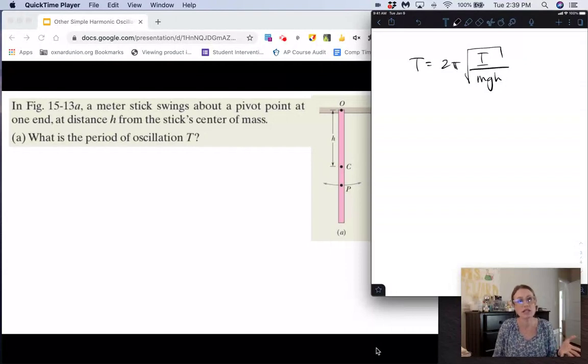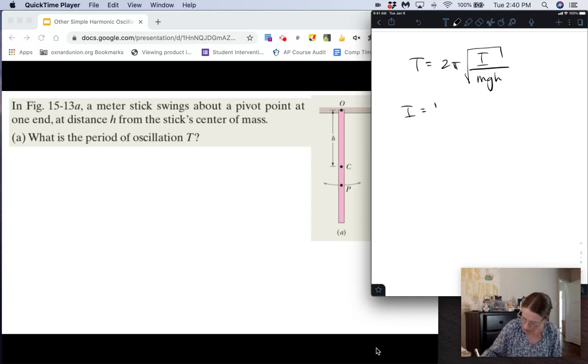So since this is a meter stick, we can model it as a rod, and so the rotational inertia of a rod rotated about one end is one-third mL squared.